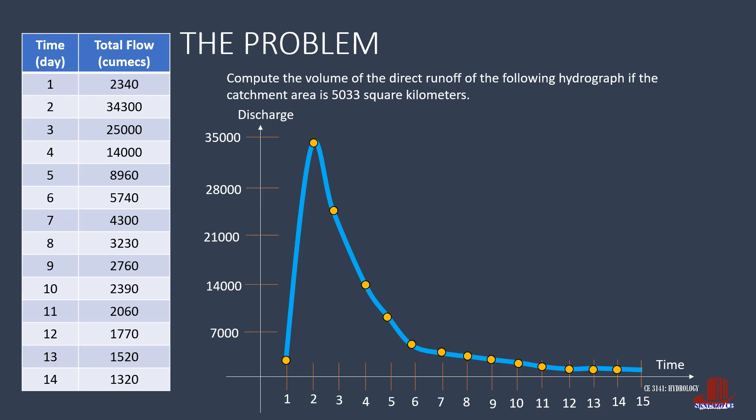Note that the highest flow is at t of 2 days, with 34,300 cumecs. From t of 3 days, the ordinates slide down. So, from the graph, we can see that the start of runoff is at the first day, with ordinate of 2340.